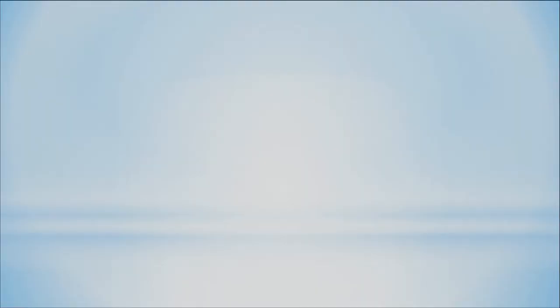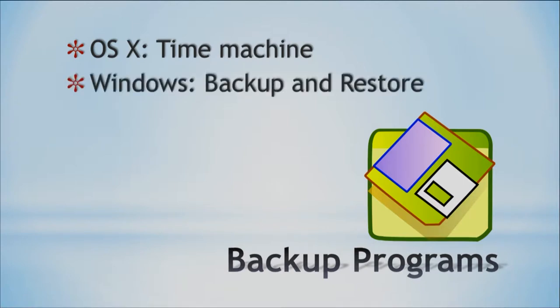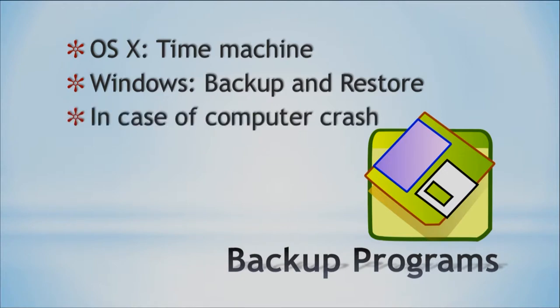Now let's look at the next type of utilities, which is backup programs. Backup programs help create backups of our data. We want to make sure that we backup items so that in case we have a system crash, you can restore your data. One provided by OSX is called Time Machine — it's built in, so you can set it up and configure it. Another one provided by Windows is called Backup and Restore. We want to use these in case of a computer crash so you can recover your data.